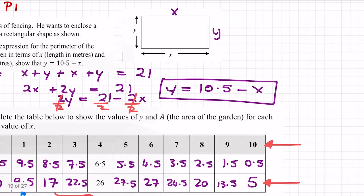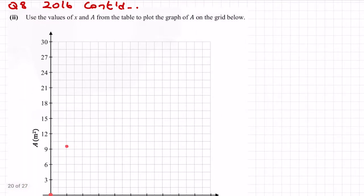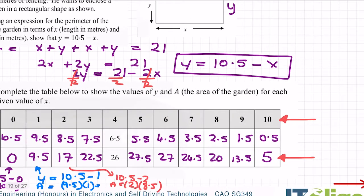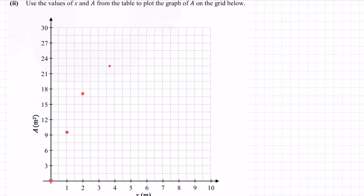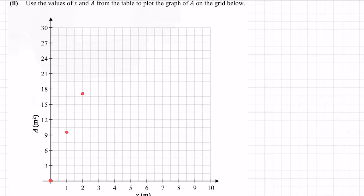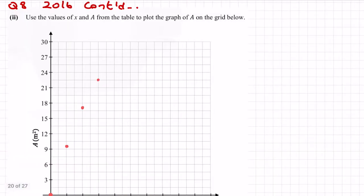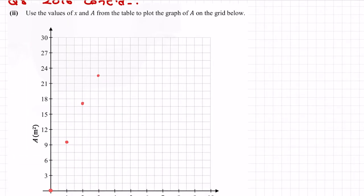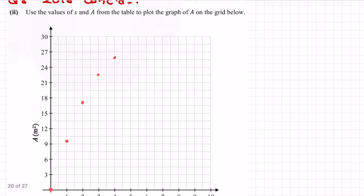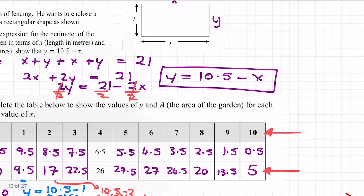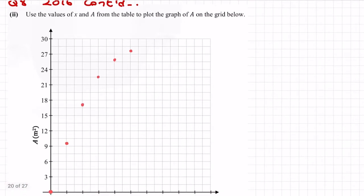Okay, 2 and 17. 2, 15, 16.5, 17. 3 and 22.5. Okay, 4 and 26. 5 and 27.5. 6 and 27.